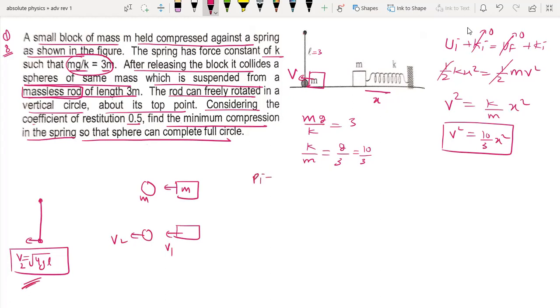M into V equal to M V1 plus M into V2, so V is equal to V1 plus V2, equation number 1. For coefficient of restitution e, V2 minus V1 upon U1 minus U2, 0.5 is equal to 1 by 2, so V2 minus V1 equal to V by 2.